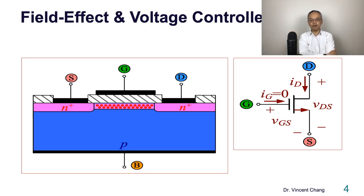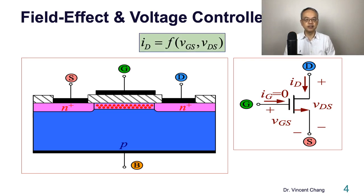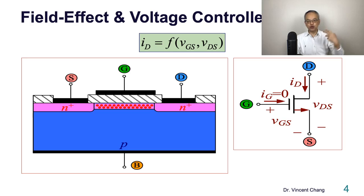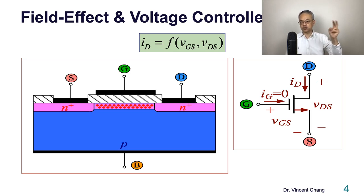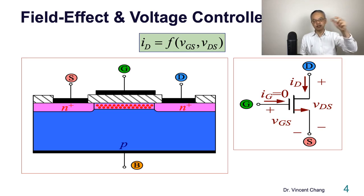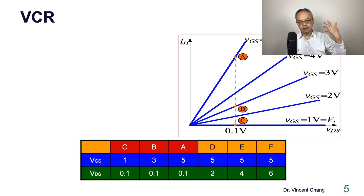Number two: the concept of field effect and voltage control. This concept tells us that ID — the current between drain and source, the channel current, the majority carrier current — is controlled by two voltages: number one, VGS, the voltage between gate and source; and number two, VDS.